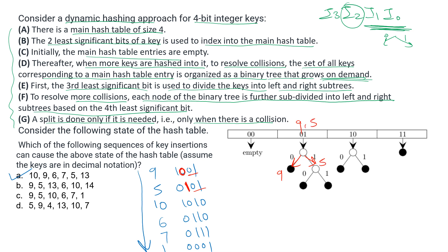Next, 10 is inserted at index 10. Then 6 causes a collision at index 10. The tree grows: zero side represents 10, one side represents 6. Both are inserted. Then 7 is inserted at its index.